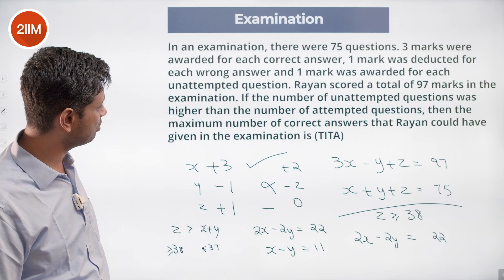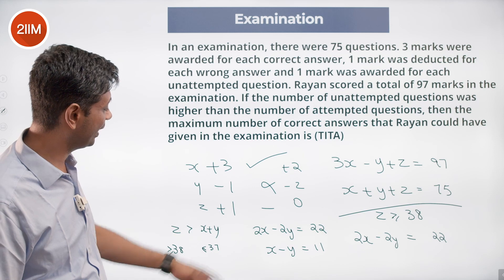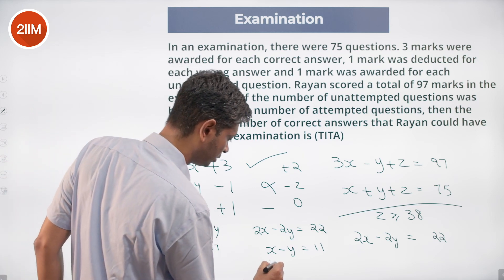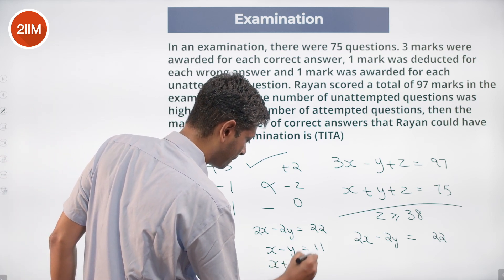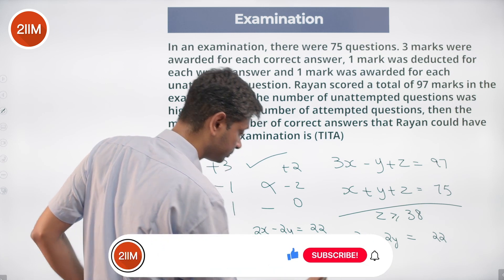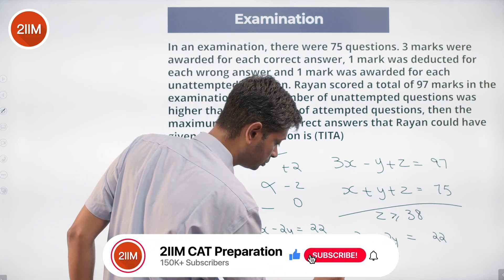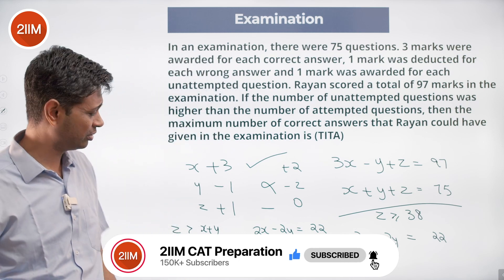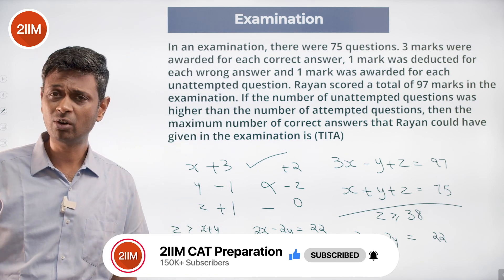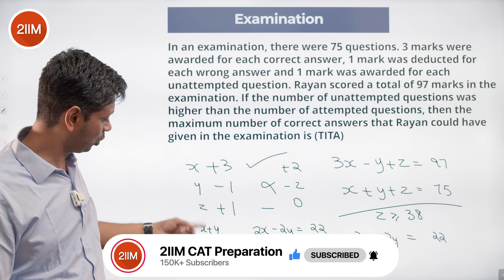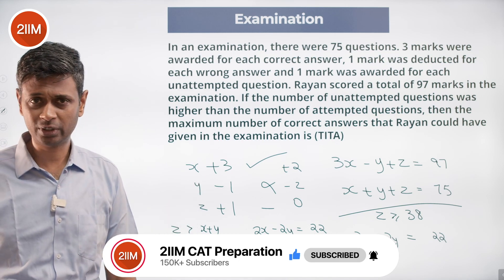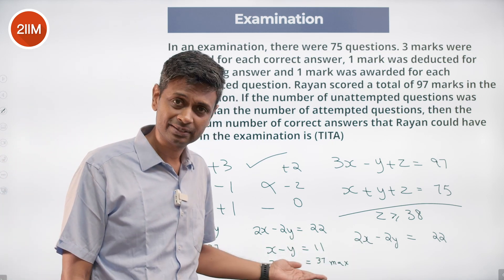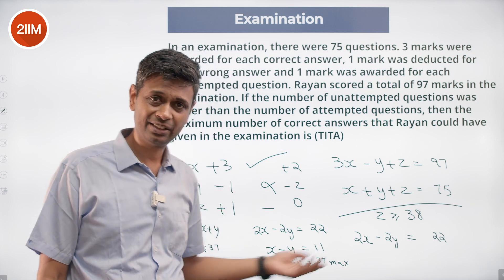We want the maximum possible value of X. X plus Y can be at most 37, because Z must be greater than X plus Y combined. So the maximum value of X plus Y is 37 — when X plus Y is higher, X can be higher. We add the two equations: X minus Y equals 11 and X plus Y equals 37.